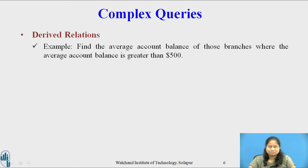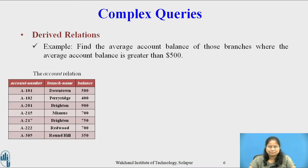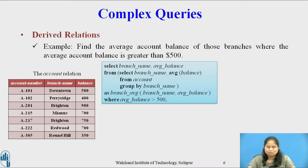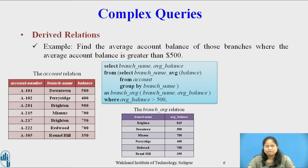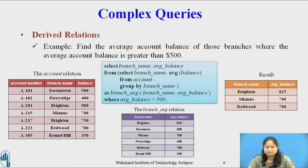To illustrate the use of a subquery expression in the FROM clause, consider the example: find the average account balance of those branches where the average account balance is greater than $500. The relation required is account. The query is: SELECT branch_name, average_balance FROM (SELECT branch_name, AVG(balance) FROM account GROUP BY branch_name) AS branch_average(branch_name, average_balance) WHERE average_balance > 500. The relation branch_average is the result of the subquery in the FROM clause, which finds the average balance branch-wise. The final result contains only those tuples from branch_average where the average account balance is greater than $500.